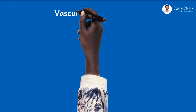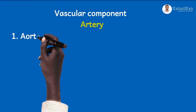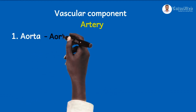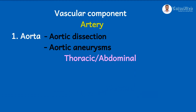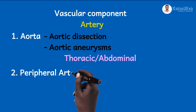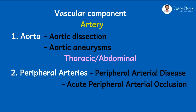The next component is the vascular component. Beginning with the arteries: for the aorta, conditions include aortic dissection and aortic aneurysms — whether thoracic or abdominal. We can also discuss the congenital condition coarctation of the aorta. For the peripheral arteries, conditions include peripheral arterial disease and acute peripheral arterial occlusion. Still on the vascular component, we can discuss vasculitis — large vessel vasculitis, medium vessel vasculitis, and small vessel vasculitis.